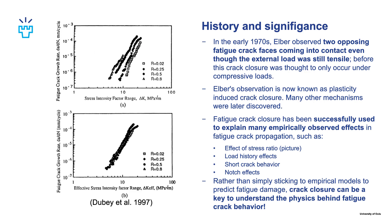This pair of figures illustrates the effect of stress ratio. We can see that with the same stress intensity factor range, a higher stress ratio leads to a higher propagation rate. But if we account for crack closure by using delta K_eff instead of the normal delta K, then the curves land on top of each other, and essentially the effect of stress ratio gets explained by crack closure. Rather than simply sticking to empirical models, crack closure can be a key to understanding the physics behind fatigue crack behavior and making even better predictions.